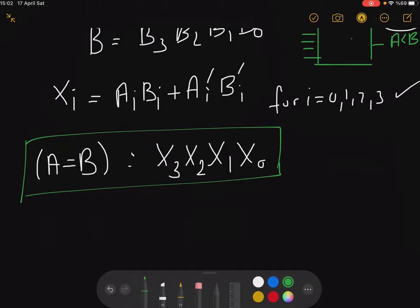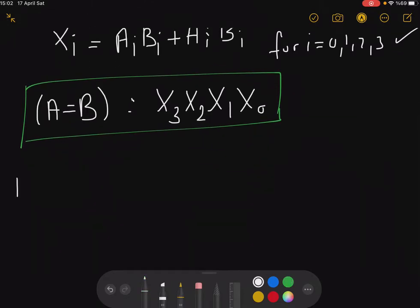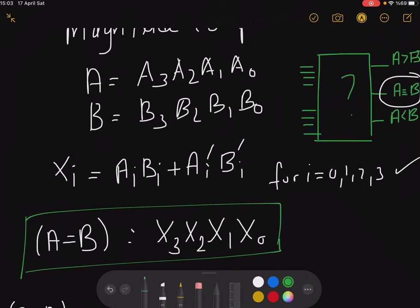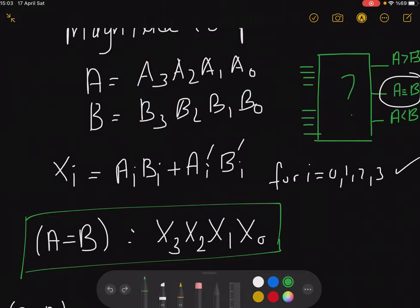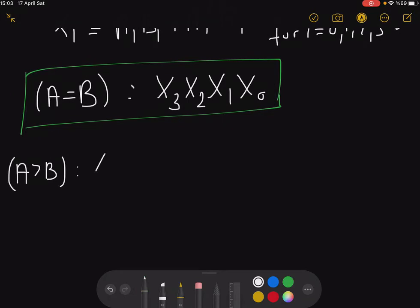Now what about the A is greater than B condition? How can this be possible? If your most significant digit, this one, is larger than B, it means that your A is larger than B no matter what your other remaining digits are on the right hand side. So if your A₃ is one but your B₃ is zero, it means that A is larger than B.